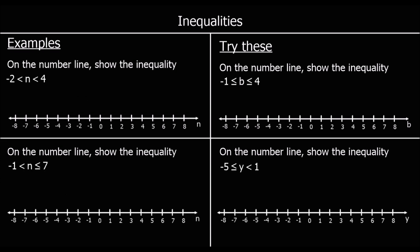Another set of questions. This time, on the number line, show the inequality: n is bigger than negative 2 and also less than 4. So n is in between negative 2 and 4. We do one circle at negative 2, one at 4, and we join them up. It can't equal either of them, so we don't colour them in.